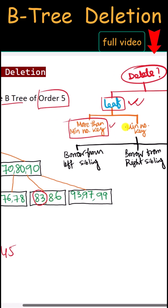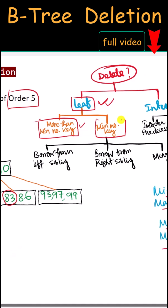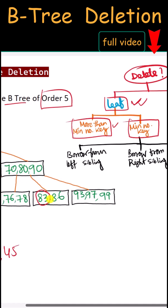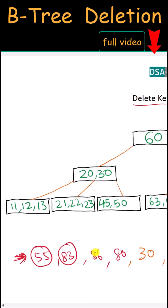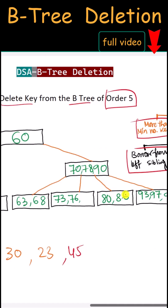Next we have 83. Here we have 83 in a leaf node, and this node has the minimum number of keys. So we have to borrow from the left sibling. The borrowing is done through the parent node: 80 will come down and 78 will be taken from the left sibling, and then we can delete 83.